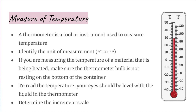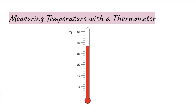A thermometer is a tool used to measure temperature and should be handled with care. To use a thermometer, first consider what unit it measures in — is it in Celsius or Fahrenheit? Your eyes should be level with the liquid in the thermometer. Be sure to determine the increment of the scale. Just like measuring length, scientists estimate the last digit by visually dividing the space between the smallest marked lines, which helps define the precision of the device.